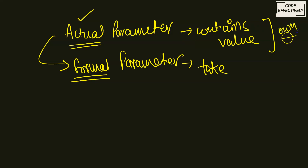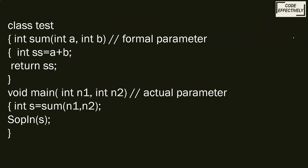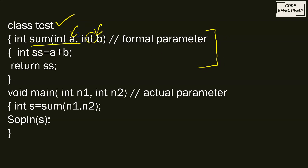This is quite an easy, one-line difference between these two parameters. Now let's look at an example — you will understand more thoroughly with the help of a real-world example. I have made a simple class called 'test' and made a function. This function is used to calculate the sum of two digits that have been passed as the parameterized input a and b. We store the sum of a and b in a variable named 'ss', and then we simply return ss.